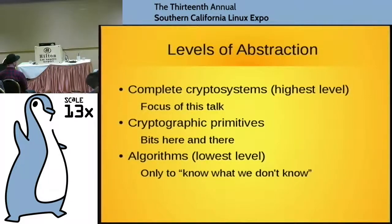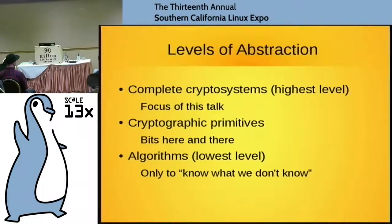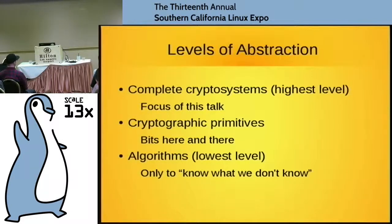At the next level up, the algorithms are actually implemented for us. They're functions in a library, they're black boxes. But what we do is they become like Lego bricks, and we put them together — we call them cryptographic primitives — into the highest level of abstraction, which is complete cryptosystems. Unfortunately, a lot of popular libraries don't actually give you complete cryptosystems. They give you a bag of building blocks and say, here, put it together — which is where a lot of exploits come from.